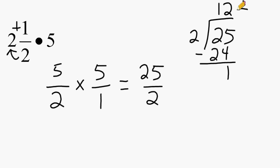And we always write our remainder as our numerator. And the divisor, which is right here, will always be the denominator. So 2 and 1 half times 5 is equal to 12 and 1 half.